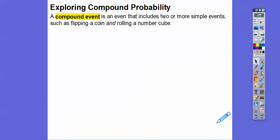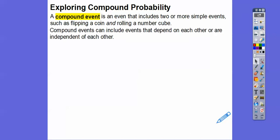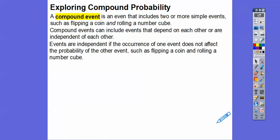A compound event is an event that includes two or more simple events. For example, flipping a coin and rolling a numbered cube. Compound events can include events that are dependent on each other or independent of each other. We're going to be working with independent events in this lesson. Events are independent if the occurrence of one event does not affect the probability of the other event, such as flipping a coin and rolling a numbered cube.